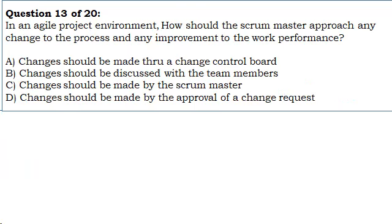In an Agile project environment, how should the Scrum Master approach any change to the process and any improvement to the work performance? A. Changes should be made through a change control board. B. Changes should be discussed with the team members. C. Changes should be made by the Scrum Master. D. Changes should be made by the approval of a change request.